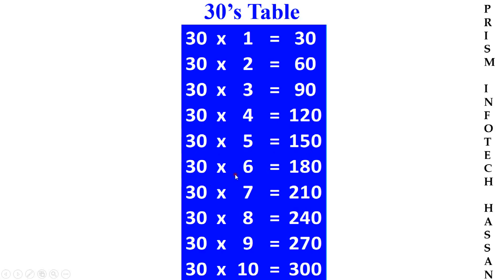30, 6 times 180. 30, 7 times 210. 30, 8 times 240. 30, 9 times 270. 30, 10 times 300.